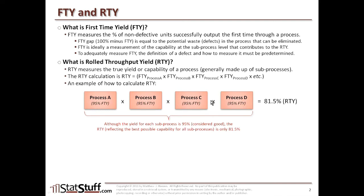Basically, the best capability you can expect from these four different sub-processes each with a first-time yield of 95% is only 81.5% as a rolled throughput yield. That means out of 100 items starting with process A, we can expect at the end — having gone through all four different processes — only about 81 or 82 of those items are actually going to be successful the first time through.